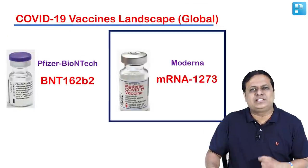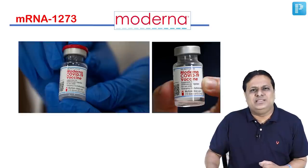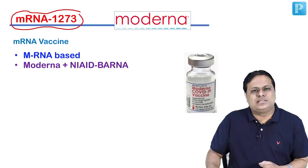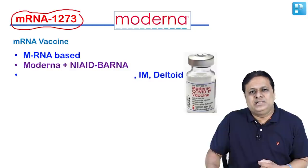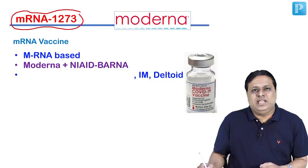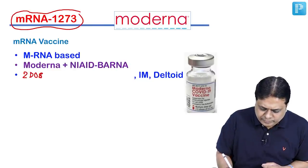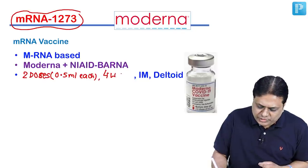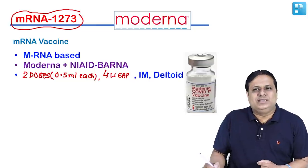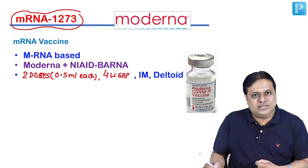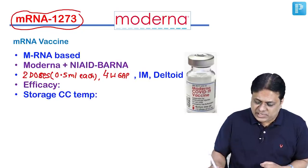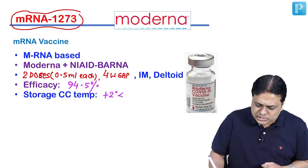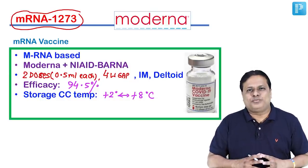The Moderna vaccine is known as mRNA-1273 — an mRNA-based vaccine developed by Moderna along with NIAD and BARDA. It is given as two doses of 0.5 ml each, with a 4-week gap, administered intramuscularly in the deltoid. Moderna vaccine has shown a very high efficacy of 94.5%, and its cold chain storage temperature is +2 to +8°C.